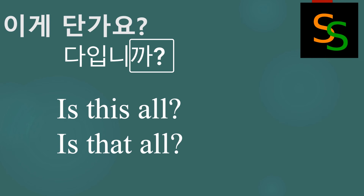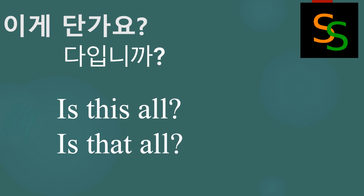Again, the same 까/요 group. As a summary, both 입니까 or 인가요 came from the root word 이다. As you know, a polite version of 이다 is 입니다. So by adding 까 or 요 at the end, it becomes a polite question — 'Is it?'